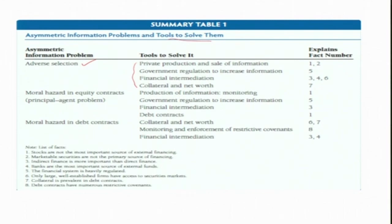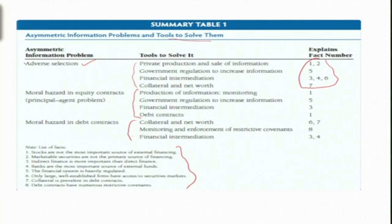Looking at the summary for moral hazard in equity contracts, these are the tools to resolve it. For debt contracts, these are the tools to minimize the moral hazard problem. These are the two kinds of outcomes of asymmetric information — adverse selection and moral hazard.